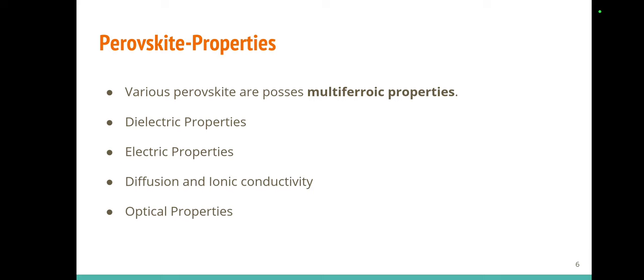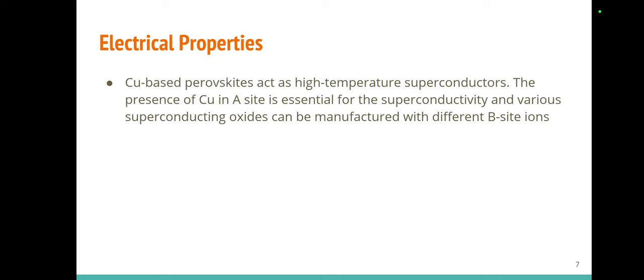Several properties have been listed which I will discuss one by one. Regarding electrical properties in perovskite materials, if we dope it with copper — if it is copper-based — then at high temperature it behaves as a superconductor. When we sit copper on A sites and different B sites, we can generate different types of materials.